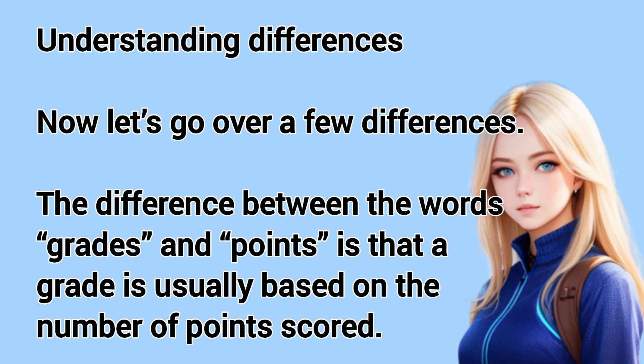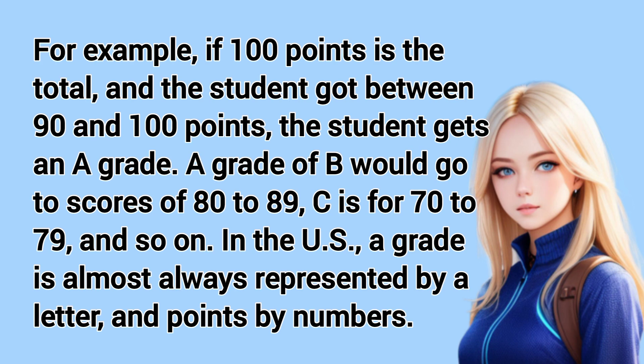Now let's go over a few differences. The difference between grades and points is that a grade is usually based on the number of points scored. For example, if 100 points is the total, and the student got between 90 and 100 points, the student gets an A grade. A grade of B would go to scores of 80 to 89, C is for 70 to 79, and so on. In the U.S., a grade is almost always represented by a letter, and points by numbers.